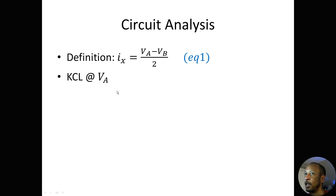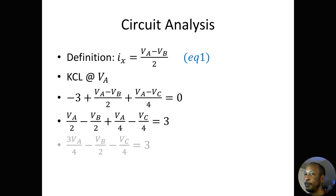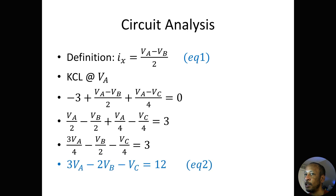KCL at VA gives me: negative 3 plus VA minus VB over 2 plus VA minus VC over 4 equals 0. Rearranging: VA over 2 minus VB over 2 plus VA over 4 minus VC over 4 equals 3, which simplifies to 3 VA over 4 minus VB over 2 minus VC over 4 equals 3, or 3 VA minus 2 VB minus VC equals 12. That's equation 2.